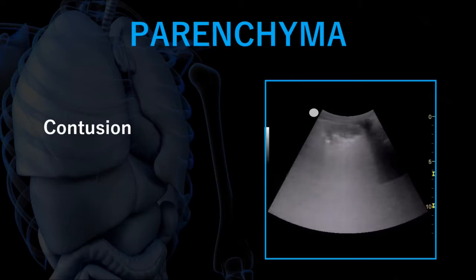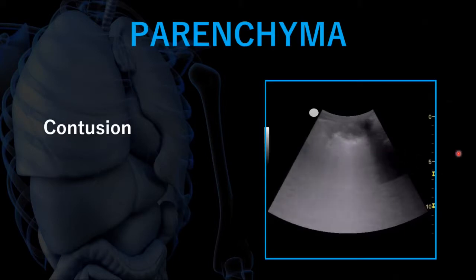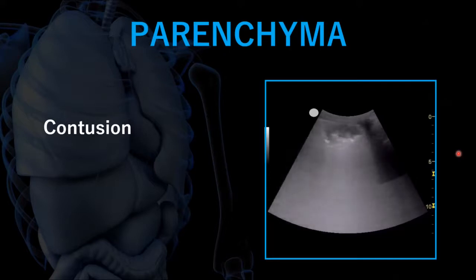We've talked about thoracic wall ultrasound and pleural ultrasound - now we can talk about the lung tissue itself. In this image, again we have the layer of skin, and this structure here is a little bit of consolidation that we can identify in the lung tissue itself - so this is now below the pleura. It's a peripheral consolidation, and in this situation, if it's next to a rib in the area of trauma, chances are that's going to be a contusion - bruising and bleeding into the alveolar structures.